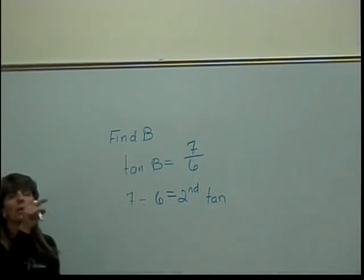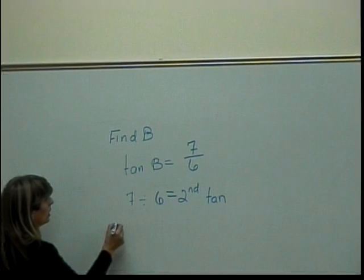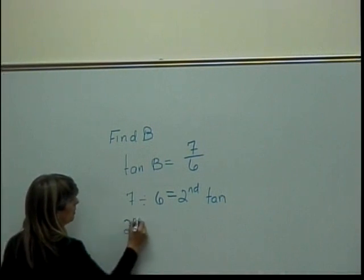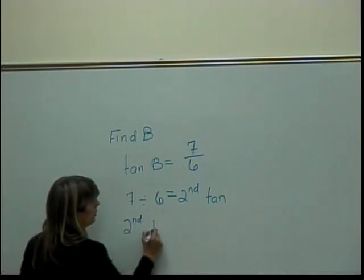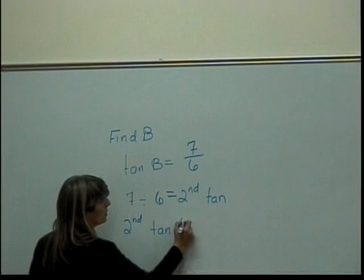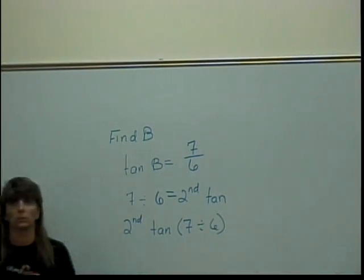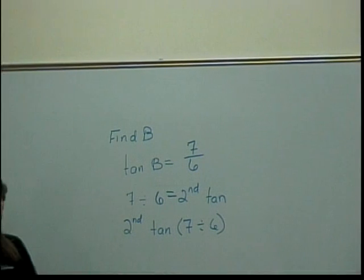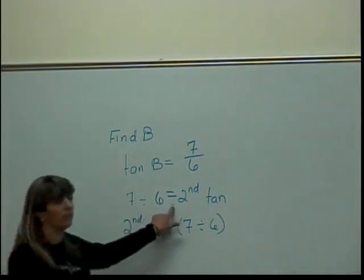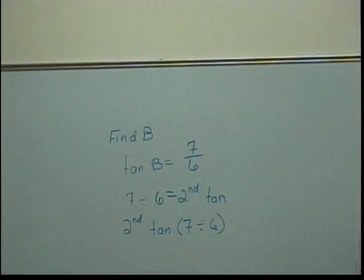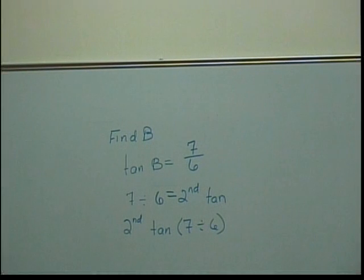Now, if you have any one of the other calculators, you're going to hit your second or shift, then your tangent button, parentheses, 7 divided by 6, close parentheses. Some of you don't even have to open the parentheses. You need the equal sign, otherwise you're going to do it with just 6. And you should come up with the angle 49-point-something — 49.4. That sounds right because I know it's in the 40-something range.